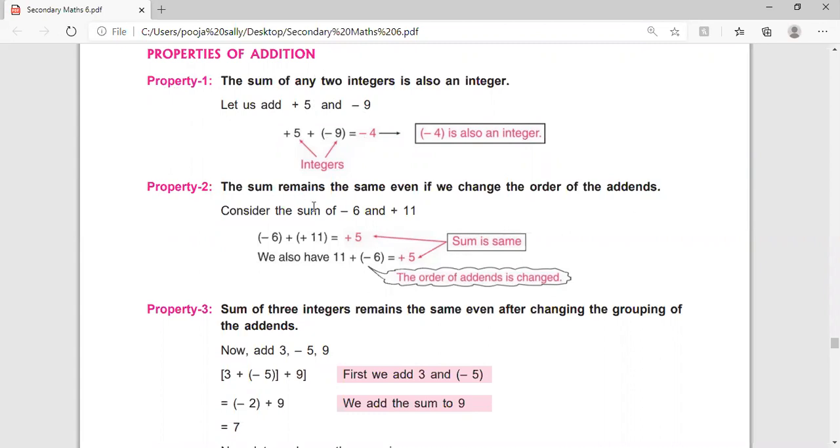Second property is that if we add the integers and change the order, even then the sum remains the same.